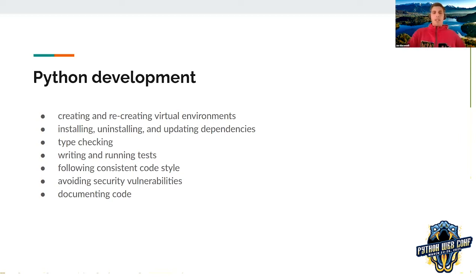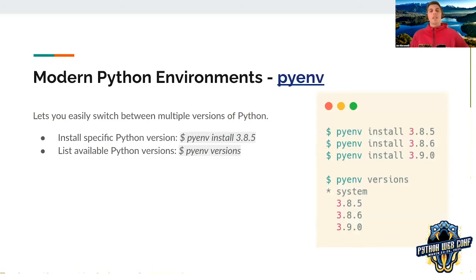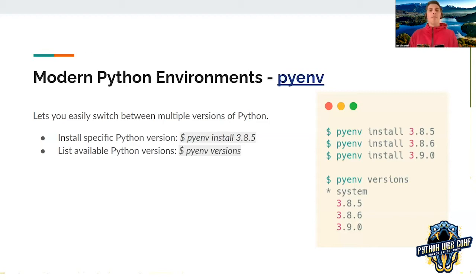Let's start at the beginning. When you start working with Python on your first project, you usually don't have any problems with Python versions. But once you develop multiple projects or work for multiple clients, you may easily come into a situation where you need multiple versions of Python installed on your machine. The tool that can help you here is pyenv, which is used to install specific Python versions, list available versions, and easily switch between them.